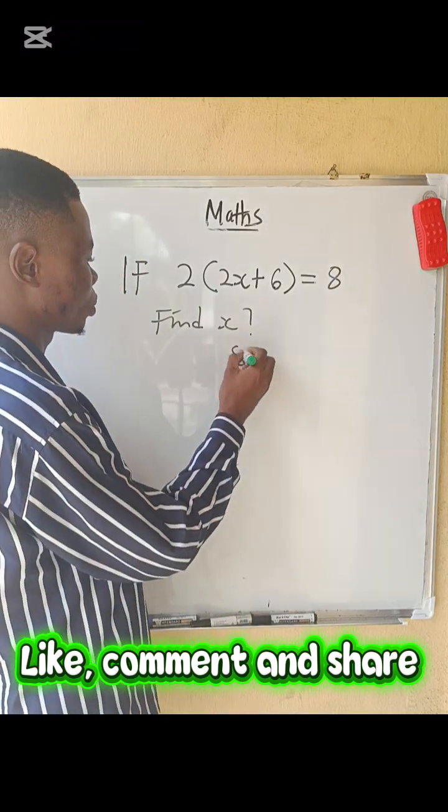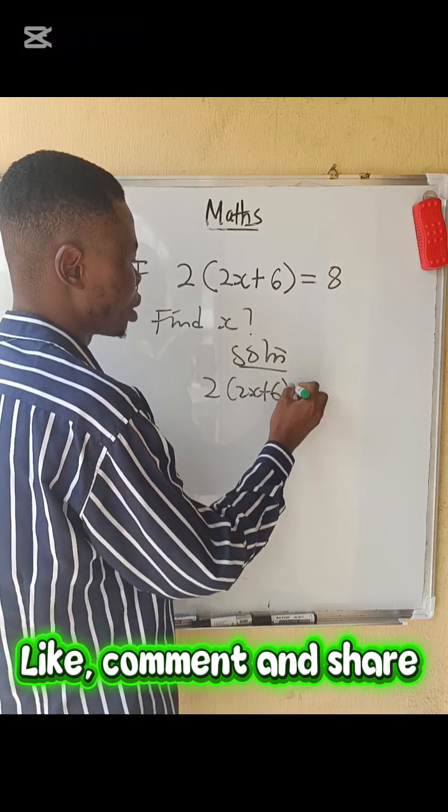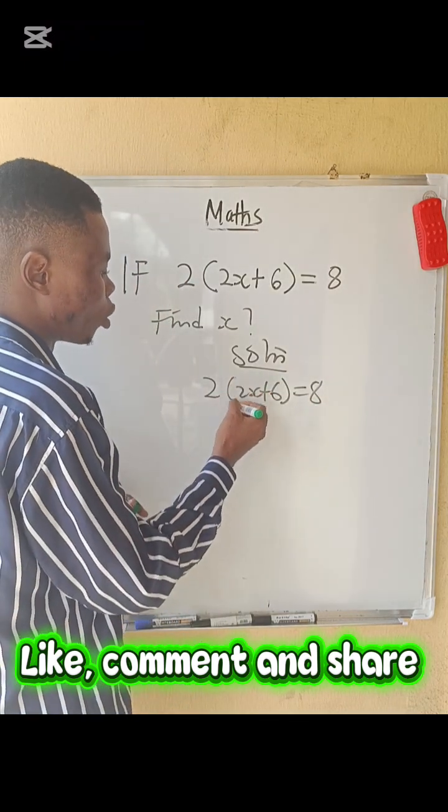This is a very simple solution. 2 into 2x plus 6 equals to 8. What do we do? Remember that this 2 is multiplying the whole bracket.